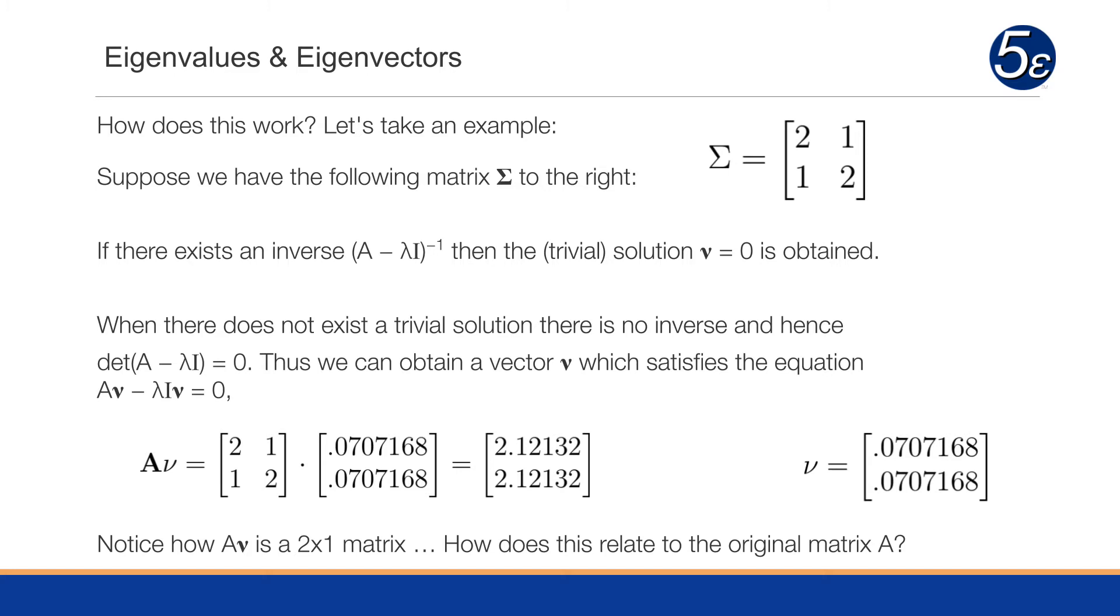But when there does not exist a trivial solution, there is no inverse, and therefore, the determinant of A minus lambda I will equal zero. And that means we can obtain a vector nu which satisfies the equation A times nu minus lambda I nu equals zero.